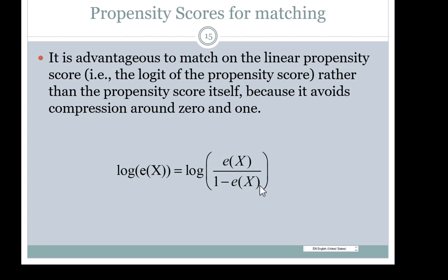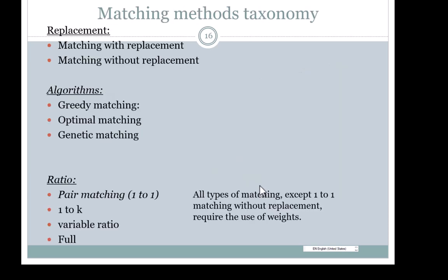For propensity score matching, we typically don't match on the propensity score itself but on the logit of the propensity score. There are several variations of matching: you can match with replacement or without replacement, using different algorithms, and each algorithm may obtain different levels of covariate balance. For example, the genetic algorithm as implemented in the matching function in R is designed to specifically balance the distribution of treatment and control with respect to covariates.